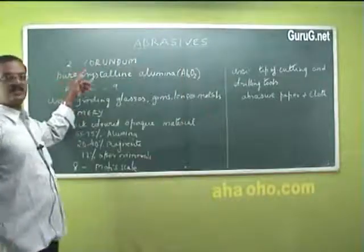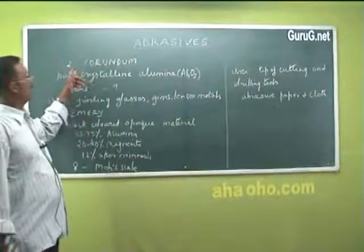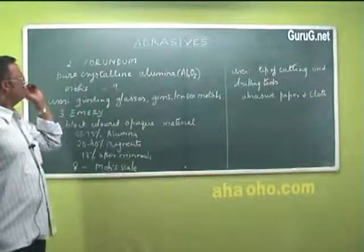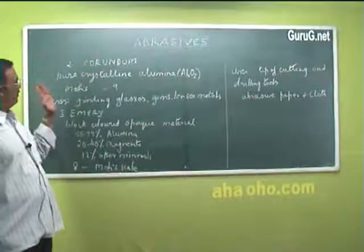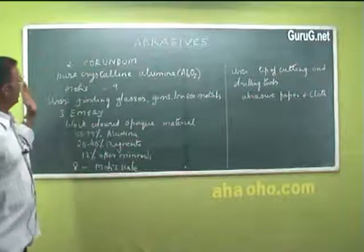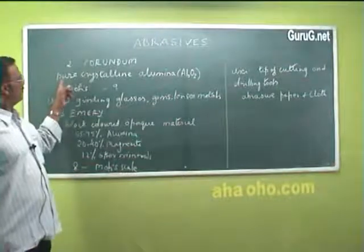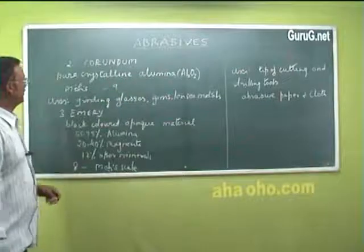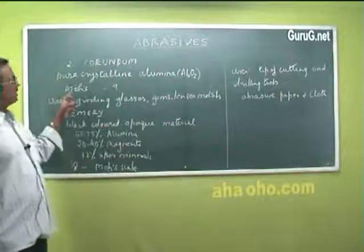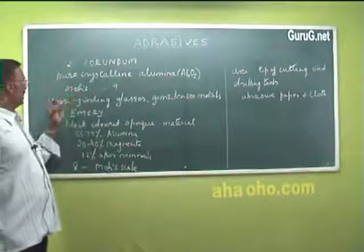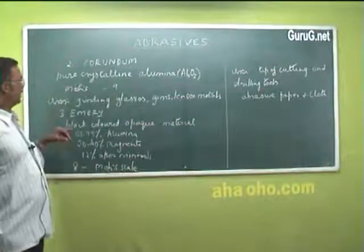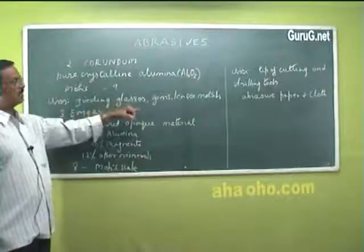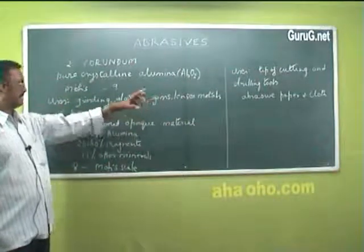The next non-siliceous abrasive is corundum. It is an opaque material made up of pure crystalline aluminum oxide, Al2O3. Its hardness is 9 on the Mohs scale. It is mainly used for grinding glass, gems, lenses, metals, etc.